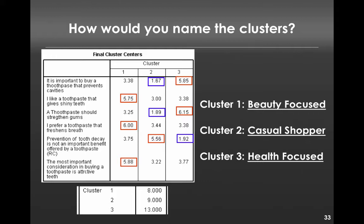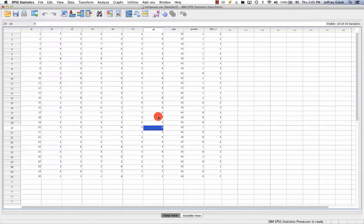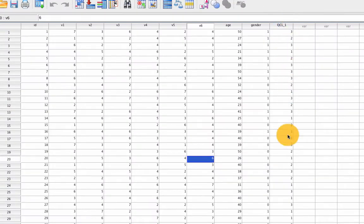So now that we have these three different clusters, we might want to see how their demographic characteristics vary. If we pop back into SPSS, we see we now have a new column. This is the cluster membership.